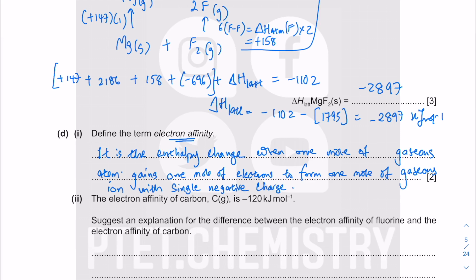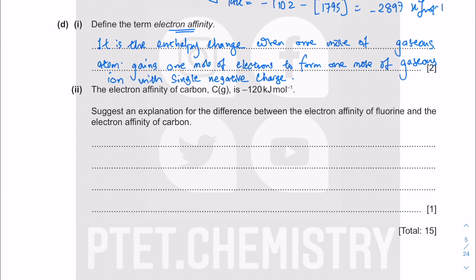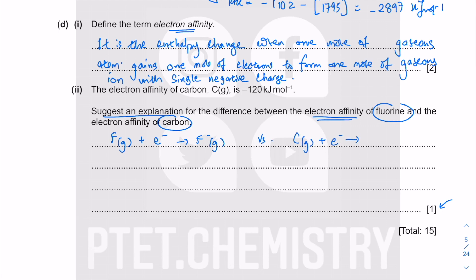The question gives four lines for one mark — a 'suggest and explain' question. The factors that govern electron affinity require us to compare fluorine versus carbon. For fluorine: F(g) + e⁻ → F⁻(g), and for carbon: C(g) + e⁻ → C⁻(g). This is the first electron affinity. When fluorine gains one electron, it achieves the electronic configuration of neon.